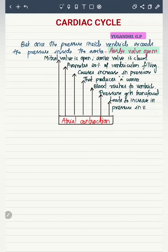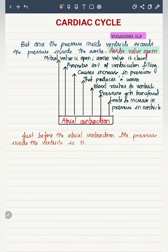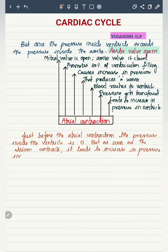Because of the contraction, blood rushes into the ventricle, and along with the blood, the pressure also gets transferred. Before the atrial contraction, the pressure inside the ventricle is just zero. Once the atrial contraction happens and blood rushes from the atrium into the ventricle, the pressure inside the ventricle keeps on increasing.